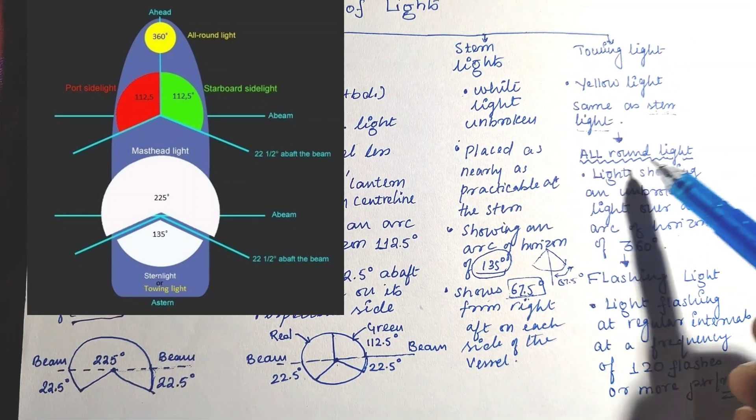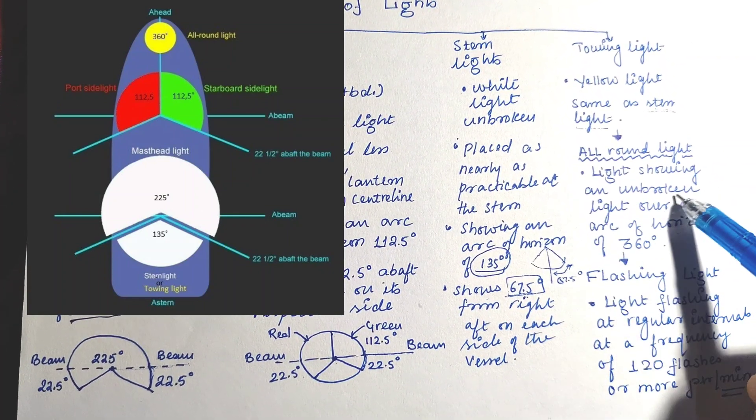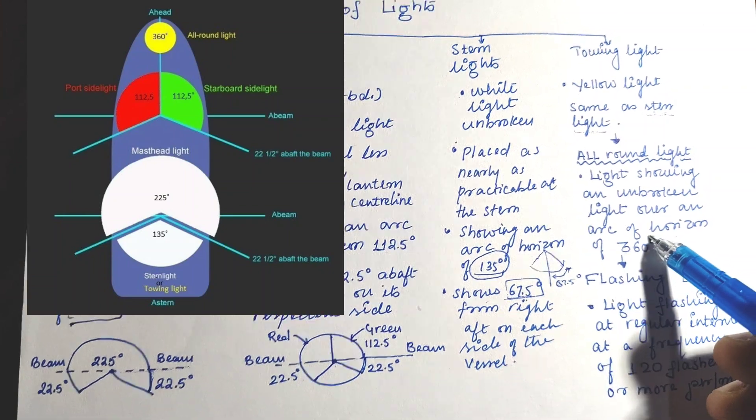All-round light shows an unbroken light over a horizon of 360 degrees.